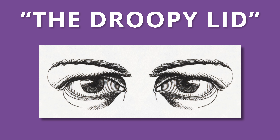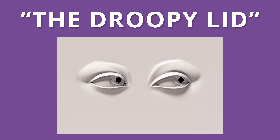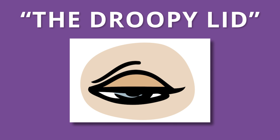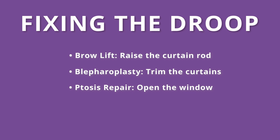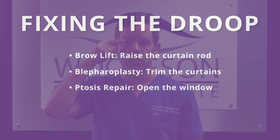When a patient comes to me and says they have a droopy lid, I want to be more precise. I think of it in three categories: a droopy brow — I call this the curtain rod; droopy extra lid skin — I call that the curtains; and a drooping lid itself — I call that the window. You can raise the curtain rod, you can trim the curtains, or you can open the window.